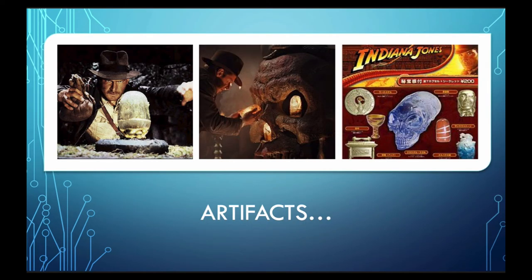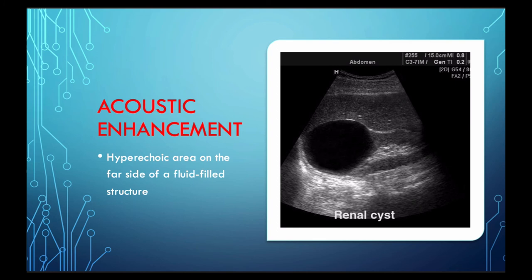Last but not least, let's talk about a few artifacts. These are things based on physical principles of sound waves that we will encounter, and they're important because they can help us identify certain structures that are normal or abnormal. Acoustic enhancement is where you might see a bright hyperechoic area on the far side of a fluid-filled structure. In this case we have a renal cyst — you can see how bright it is on the backside of that cyst, and also the bladder, gallbladder, and eye. Any time you have a fluid-filled structure, the sound waves that travel through them are minimally attenuated, which makes the back of the structure appear brighter compared to the surrounding structures.